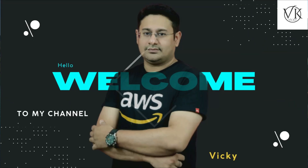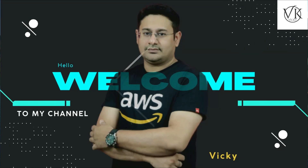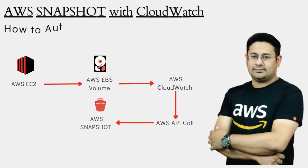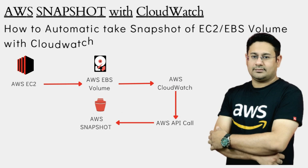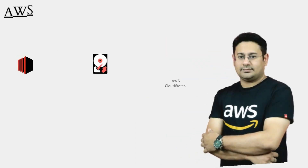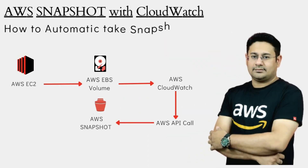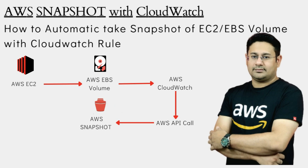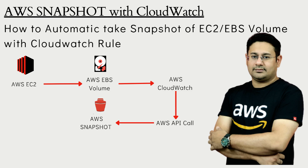Hi YouTube family, my name is Vicky and in today's video we are going to learn how to take snapshots automatically. Let's suppose we have a task where there is an instance or an EBS volume for which we need to take the snapshot on a daily basis. When we have to take a snapshot daily, that is something we cannot do with a manual operation, because if we go with manual operation it might be possible that someday we skip it. So in order to avoid that, we need to automate this thing to take the snapshot on a daily basis.